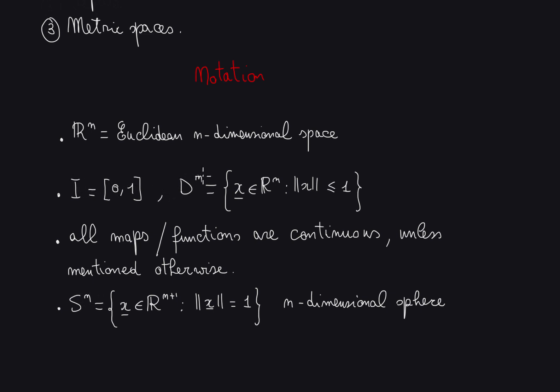Then Dn will be the closed disk in Rn, which is defined by the following inequality. These are the vectors in Rn whose norm is less than or equal to 1.